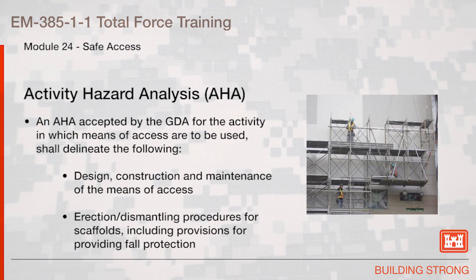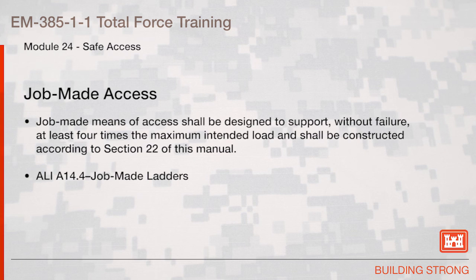Activity hazard analysis: An activity hazard analysis accepted by the government-designated authority shall delineate the design, construction, and maintenance of the means of access, and erection and dismantling procedures for scaffolds, including provisions for providing fall protection. Job-made means of access shall be designed to support, without failure, at least four times the maximum intended load and shall be constructed according to Section 22 of this manual.